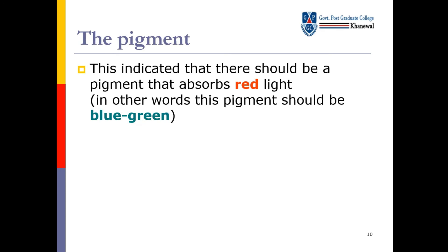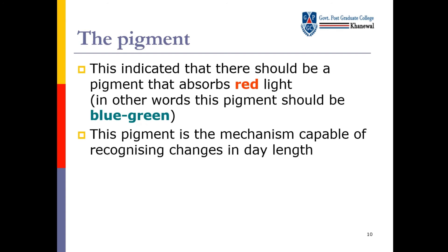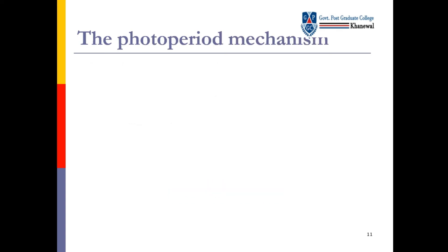This indicated that there should be a pigment that absorbs red light — red light کو absorb کرنے کے لیے ایک pigment ہوتا ہے. In other words, this pigment should be blue-green. This pigment is the mechanism capable of recognizing changes in day length. That is phytochrome — basically وہ phytochrome ہے.